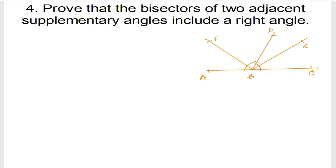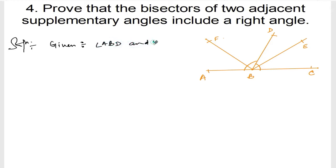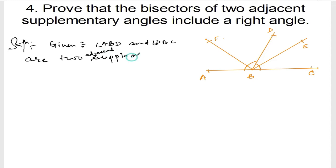Solution. Given: Angle ABD and angle DBC are two adjacent supplementary angles.